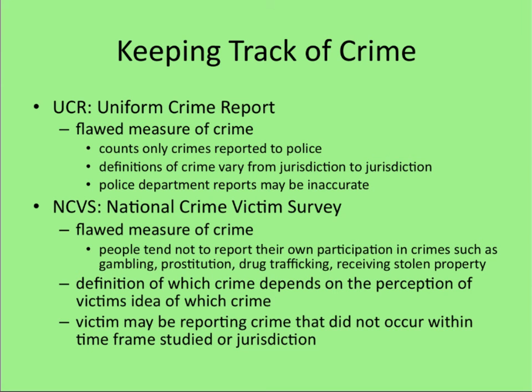These literally come up in every single class I take. The Uniform Crime Report measures eight index crimes — eight of the most important crimes, like murder and aggravated assault. But it's flawed because it counts only crimes reported to the police, not crimes that go unreported, and the definition of crime varies from place to place.